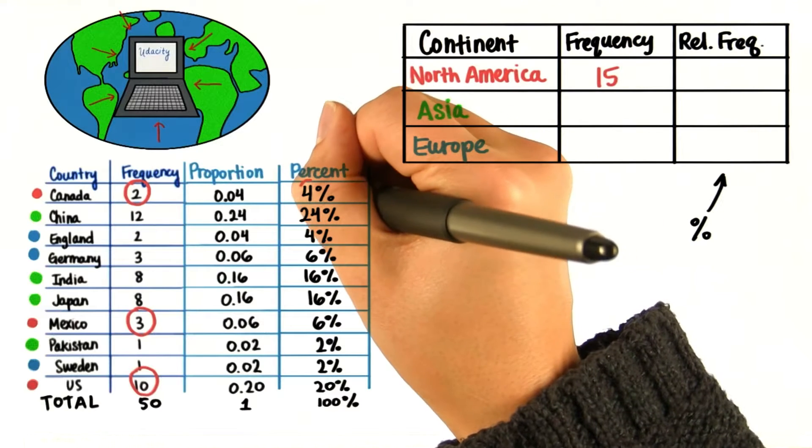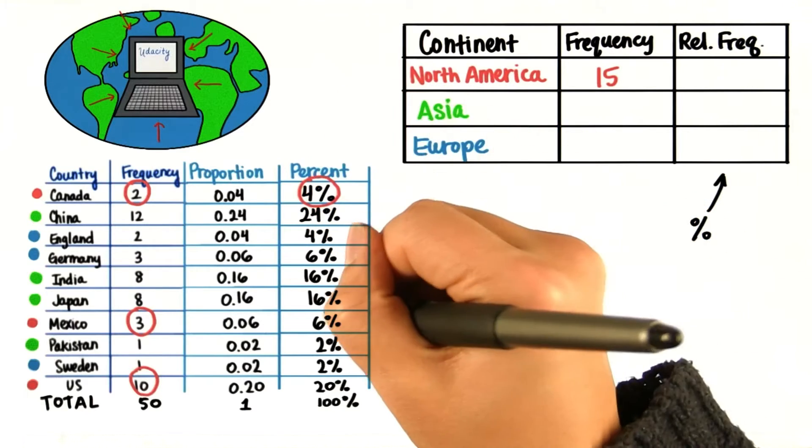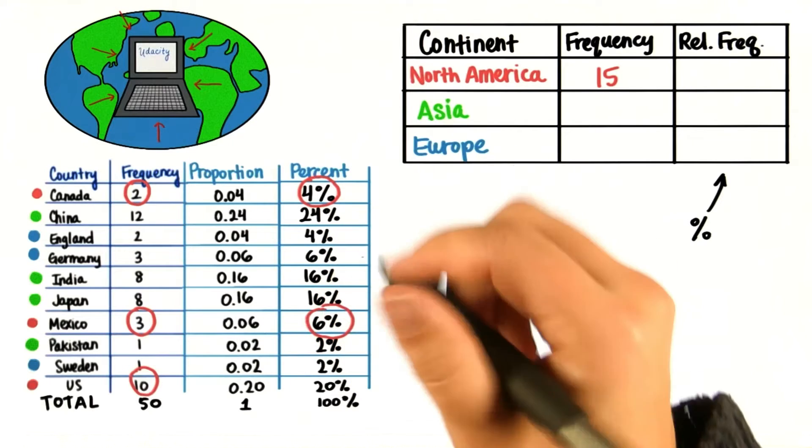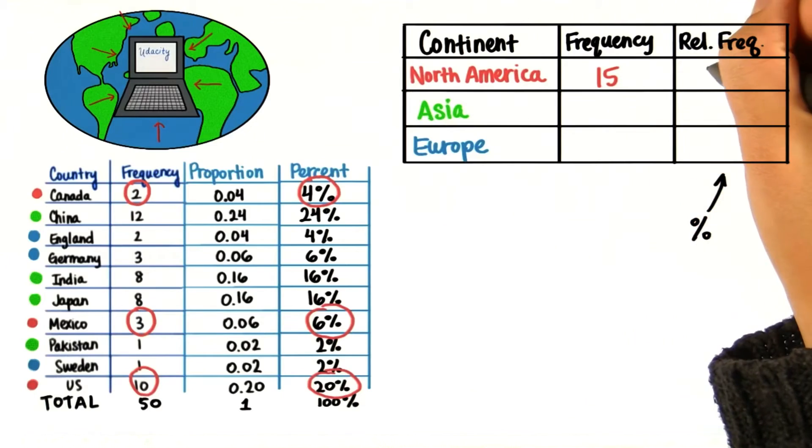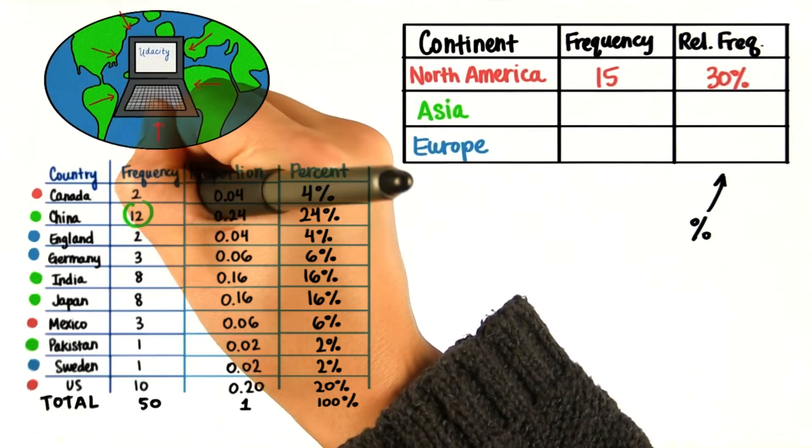And similarly, 4% are from Canada, 6% from Mexico, and 20% from the US. So if we add them, we get 30%. We have 12 students from China,